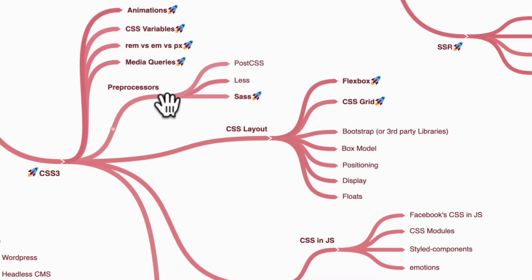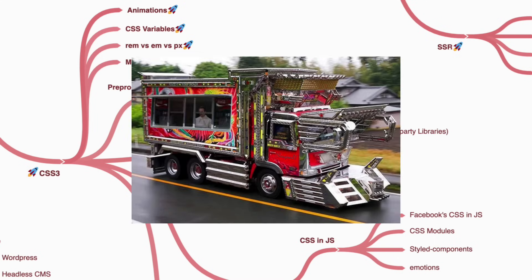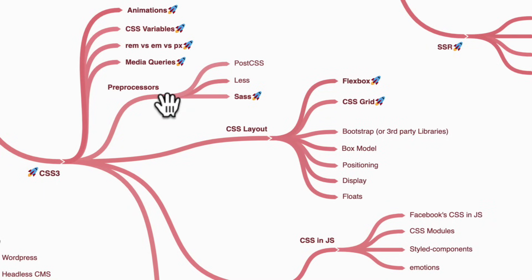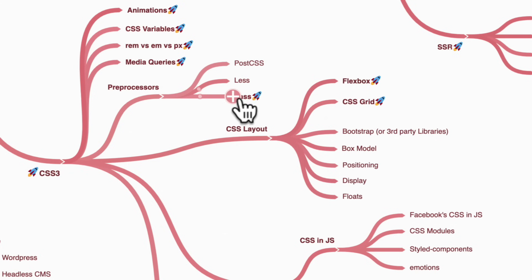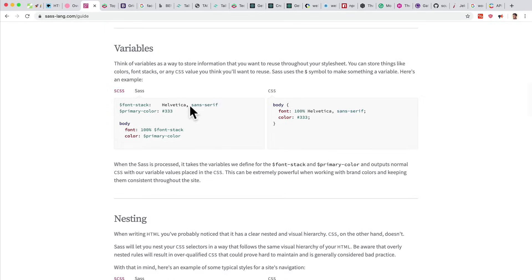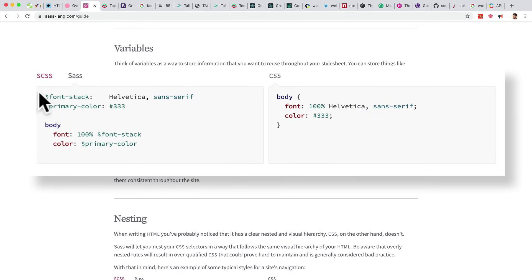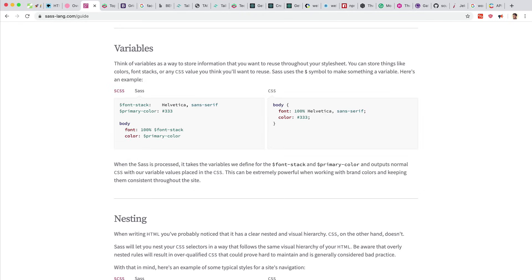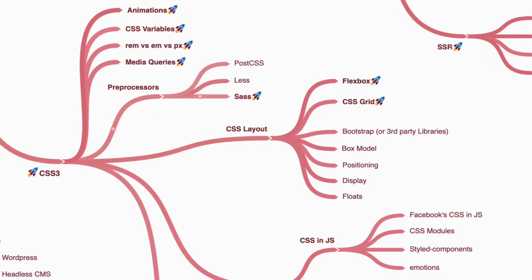The next thing is CSS preprocessors — ways to write a superset of CSS with extra features, which then get preprocessed into regular CSS. The most popular one you should stick with is Sass. There's also PostCSS and Less, but Sass is most popular. You don't need to fully study Sass — it's similar enough to CSS that you can learn it on the spot; think of it as having superpowers with CSS.